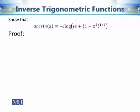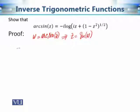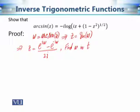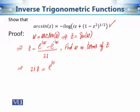Let us talk about why we define arc sine z in this way. To prove this identity, we let ω = arcsin z, which means z = sin ω. We know that sin ω = (e^{iω} − e^{−iω}) / (2i). The task is to find ω in terms of z. If we can find ω in terms of z, we obtain arc sine z as a function of z.